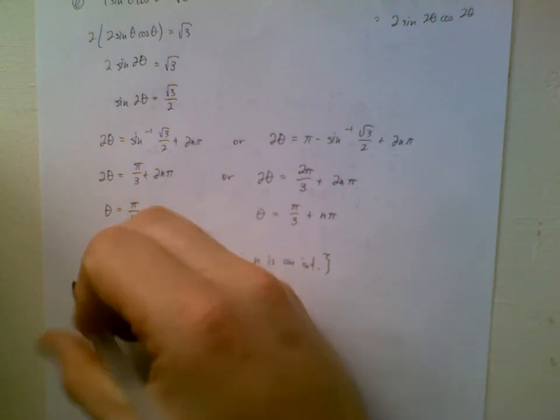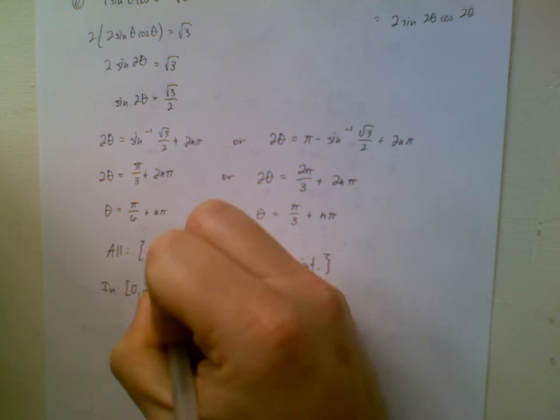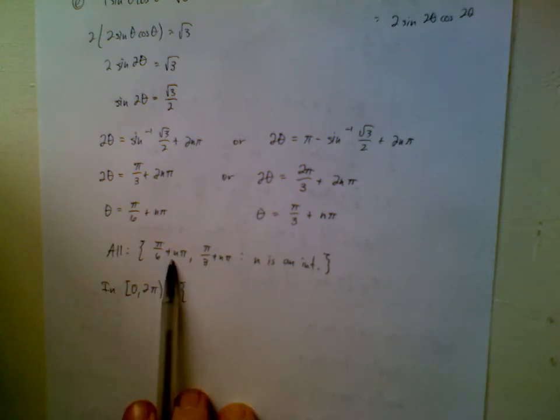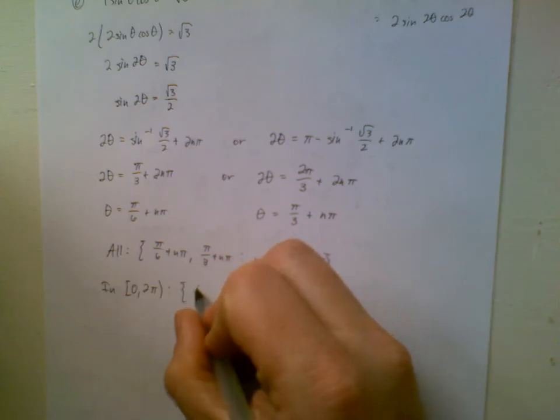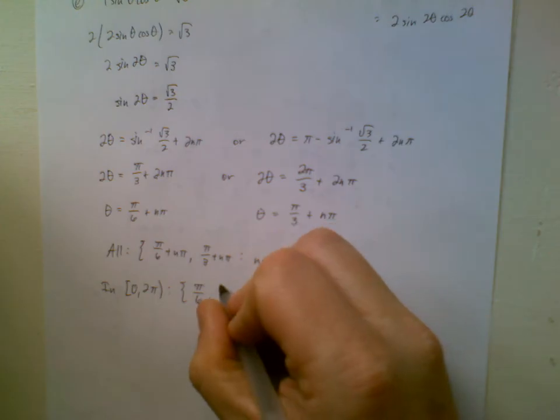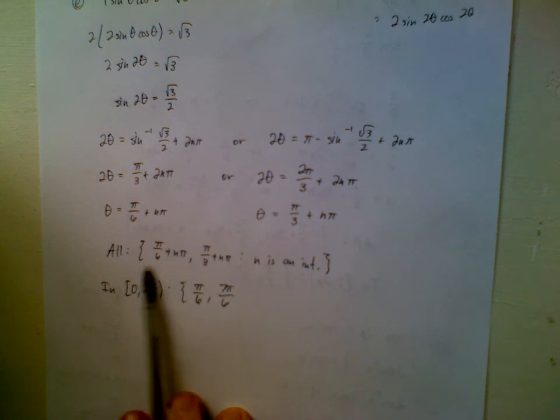If I wanted to describe the solutions that live in the interval 0 to 2 pi. Well, here when I plug in 0, I get pi over 6. When I plug in 1, I get 7 pi over 6. When I plug in 2, I've gone too far.